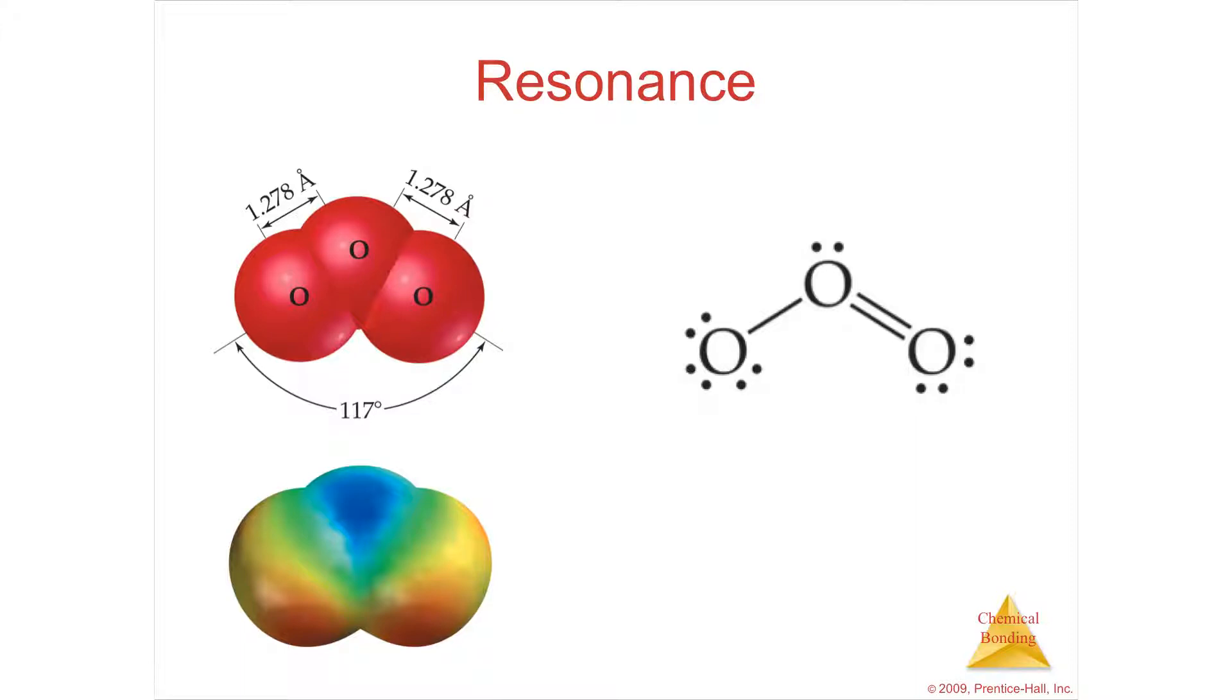If you have any compound with a double bond and a single bond, here's an example. This is ozone. O3 is ozone.